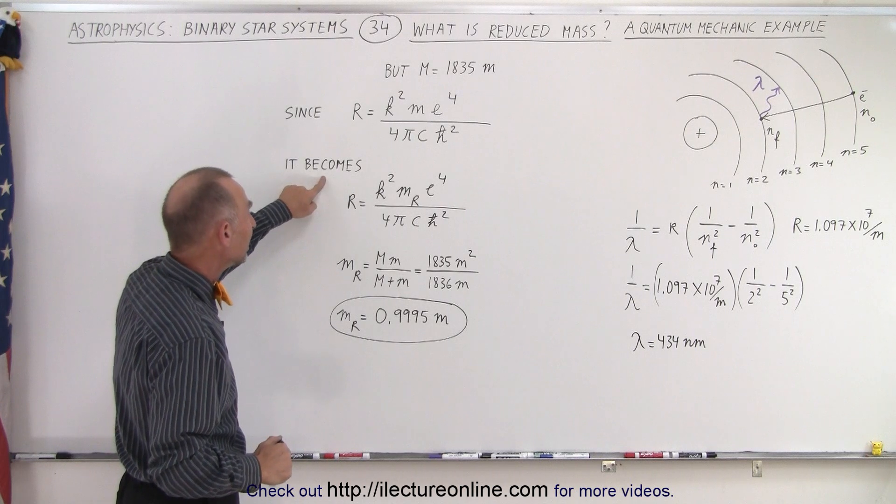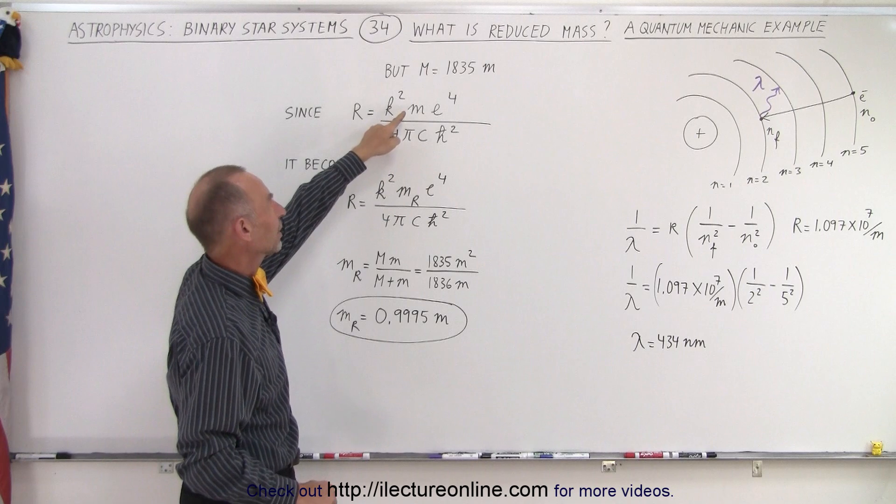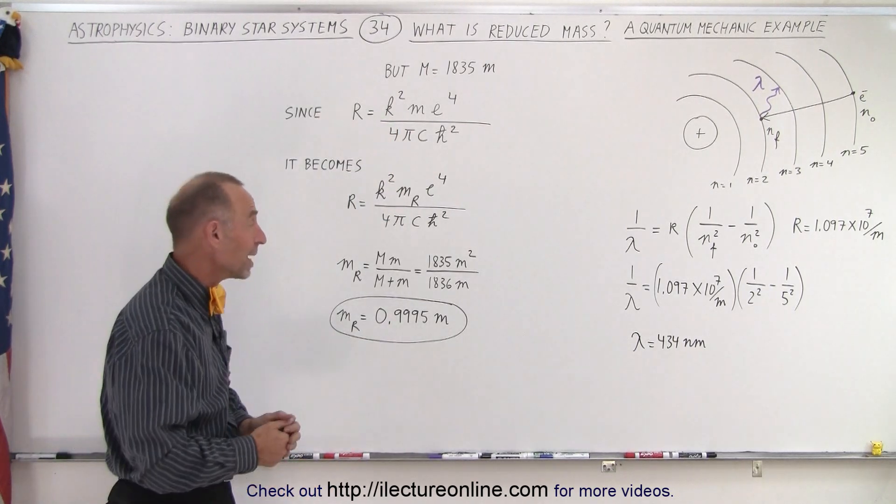Because of that, we then need to recalculate the Rydberg constant by using the reduced mass of the electron rather than the mass of the electron. How much of a difference does it make?